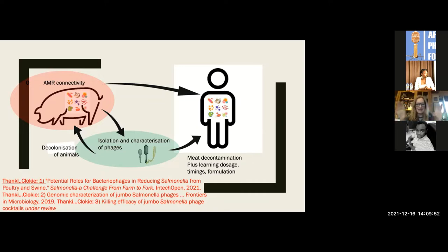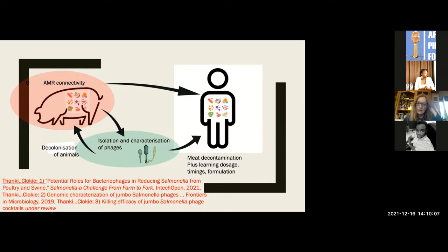We know that we generate antimicrobial resistance by using antimicrobials in livestock production. Therefore, if we can use something other than antibiotics in the production of the food we eat to treat those animals when they're sick, we'll avoid building up antimicrobial resistance in the first place. There's a huge amount to be done in that space.